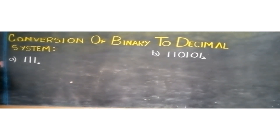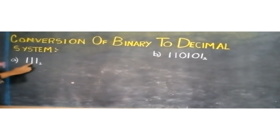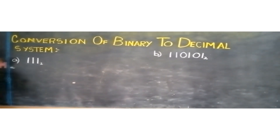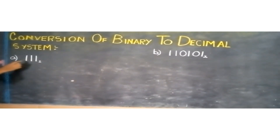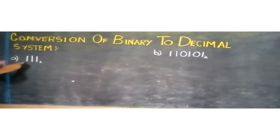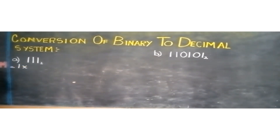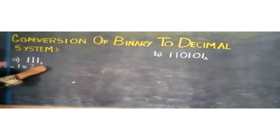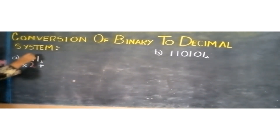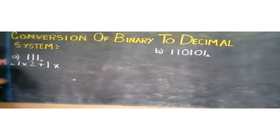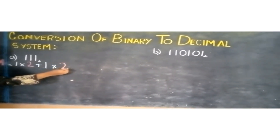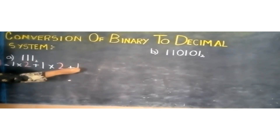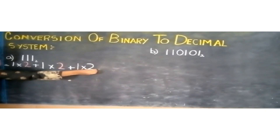Now, in order to convert the binary number into the decimal system, we will multiply each digit by two. Our first step, starting from the left-hand side, we will take the first digit 1, multiply by 2, plus the second digit 1, multiply by 2, plus the third digit 1, multiply by 2.